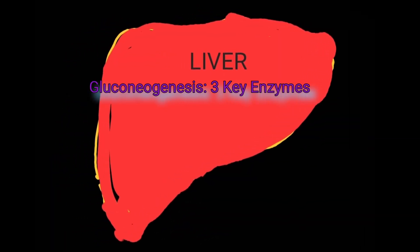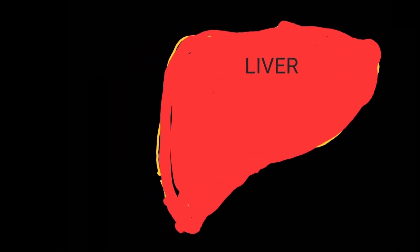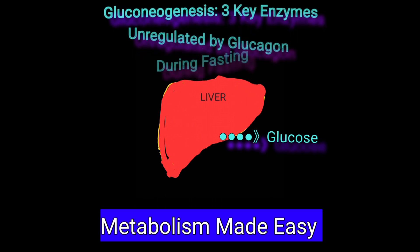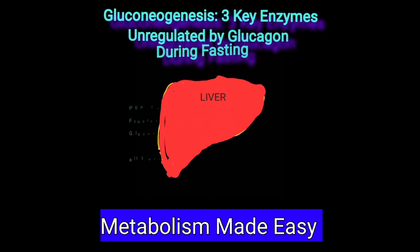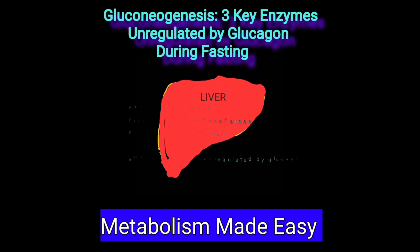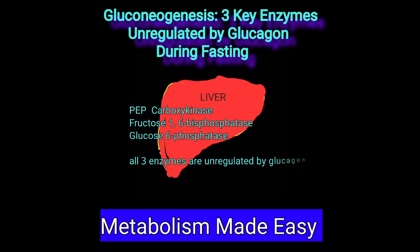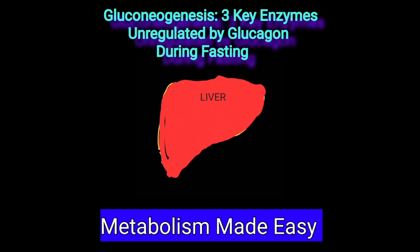In gluconeogenesis, there are three enzymes that are upregulated by glucagon. These key enzymes are PEP carboxykinase, fructose-1,6-bisphosphatase, and glucose-6-phosphatase. The expression of all three enzymes is increased by glucagon, so gluconeogenesis becomes more active when glucagon is elevated in the plasma.